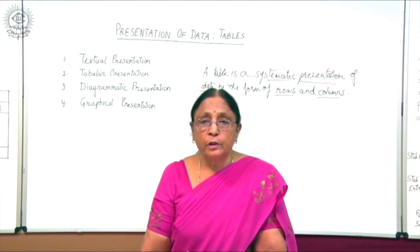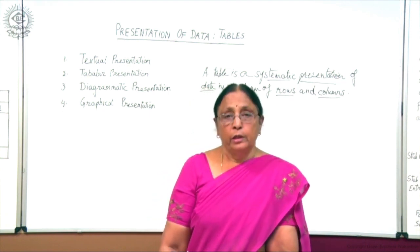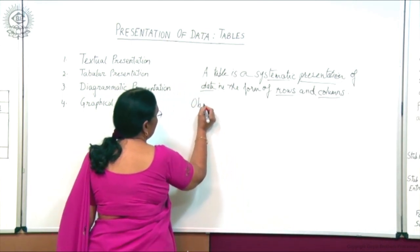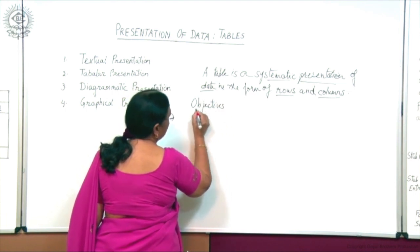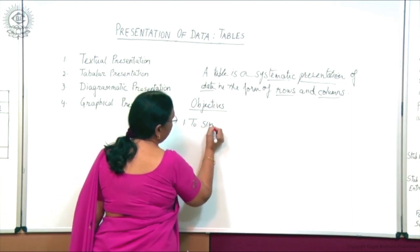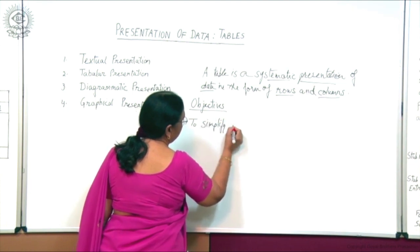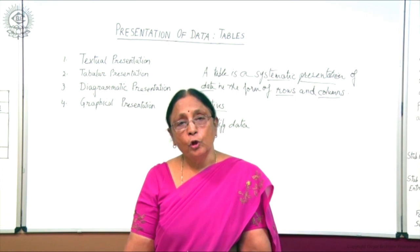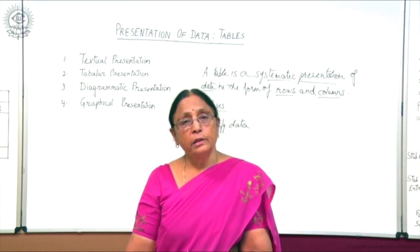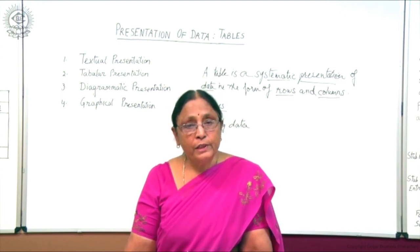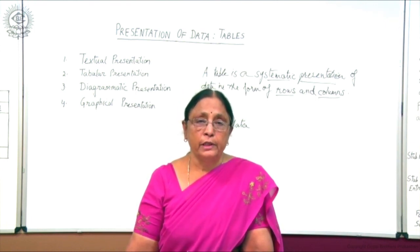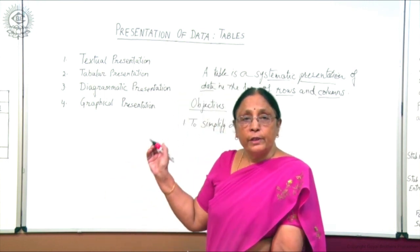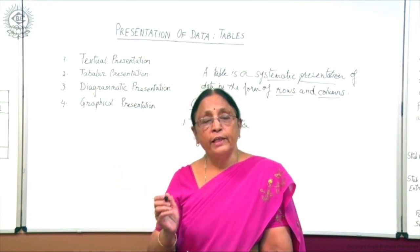What are the objectives or importance of making a table? The first objective is to simplify data. The data is collected in raw form, which is unorganized and very complex. From complex or unorganized data, you cannot make any kind of analysis until and unless you classify it in a proper systematic order. Table presentation helps you in simplifying the complex data.